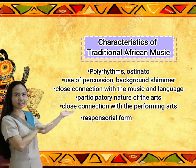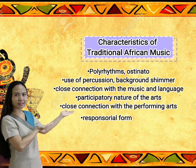Here are the characteristics of traditional African music. Polyrhythms: rhythms that occur at the same time in two different meters. Ostinato: a short pattern that repeats over and over again. Use of percussion, background shimmer. Close connection with music and language. Participatory nature of the arts. Close connection with the performing arts. Responsorial form: an exchange between a vocal or instrumental call and a group response.